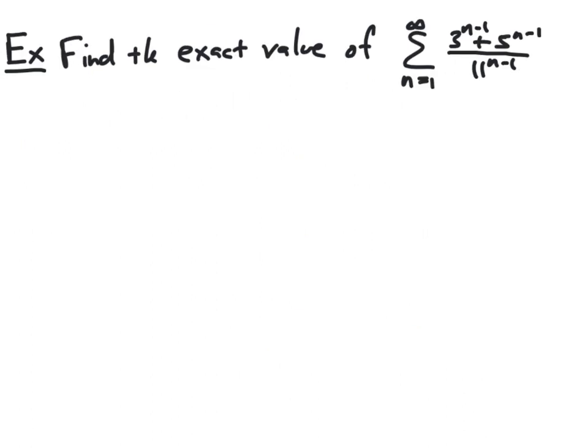In this example, we want to find the exact value of the series from n equal 1 to infinity of 3 to the n minus 1 plus 5 to the n minus 1, all over 11 to the n minus 1. We might initially think we can rewrite this as a single geometric series and use the formula a over 1 minus r. However, you'll quickly find you're unable to rewrite this as a single term to the n minus 1 power, so our strategy will be to break it up into the sum of two geometric series and apply the geometric series formula to each.